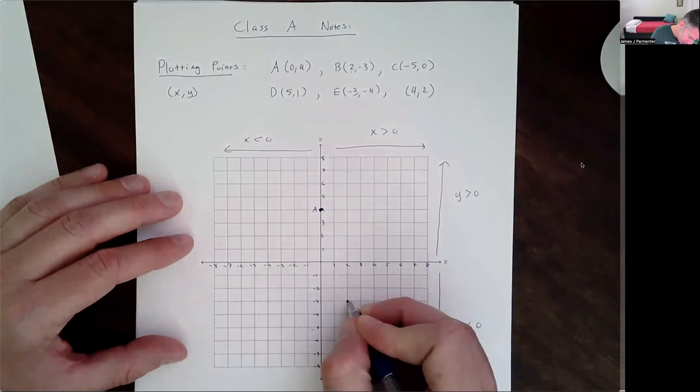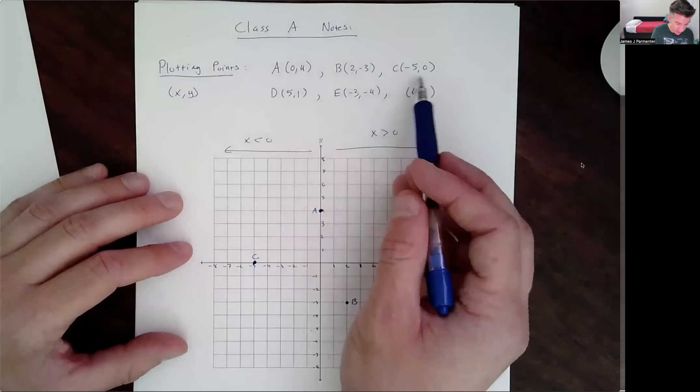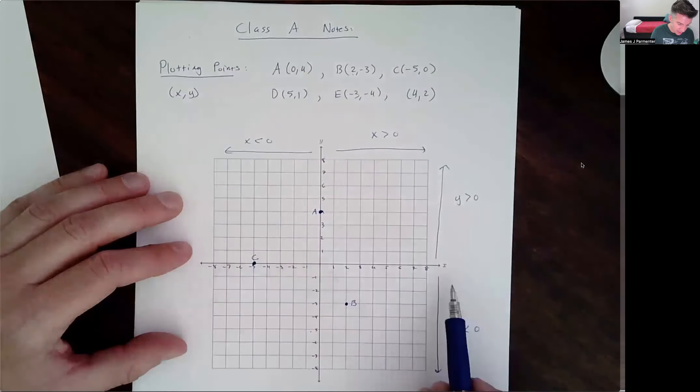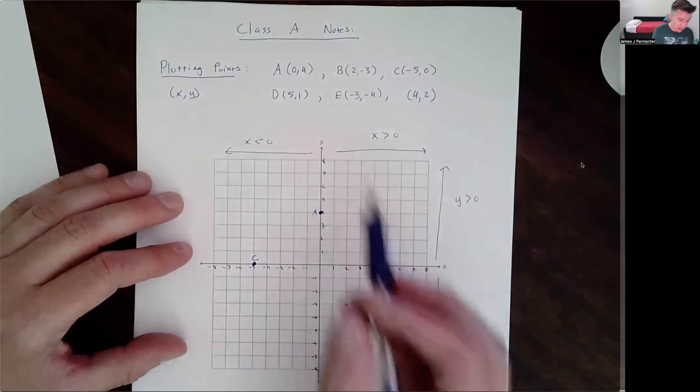For the point (-5, 0), I'm going to go 5 to the left, 0 in the up or down direction — right there. That's point C. I want to point out: point A is (0, 4) and it ends up on the y-axis. Point C is (-5, 0) and it ends up on the x-axis. So when you have an x-coordinate of 0, your point's always going to be on the y-axis. When you have a y-coordinate of 0, your point's always going to be on the x-axis.